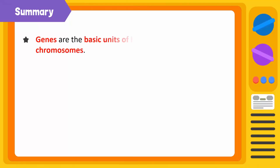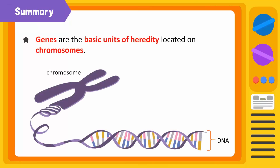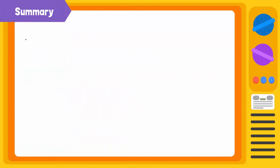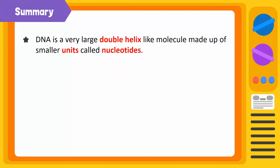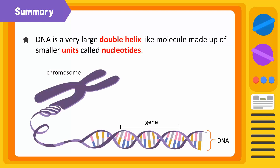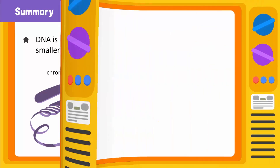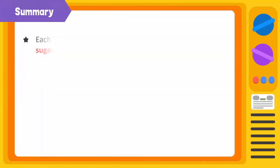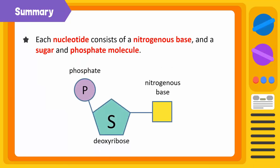Genes are the basic units of heredity located on chromosomes. They are short sections of DNA responsible for the transmission of characteristics from parents to children. DNA is a very large double helix molecule made up of smaller units called nucleotides. Each nucleotide consists of a nitrogenous base, a sugar, and a phosphate molecule.